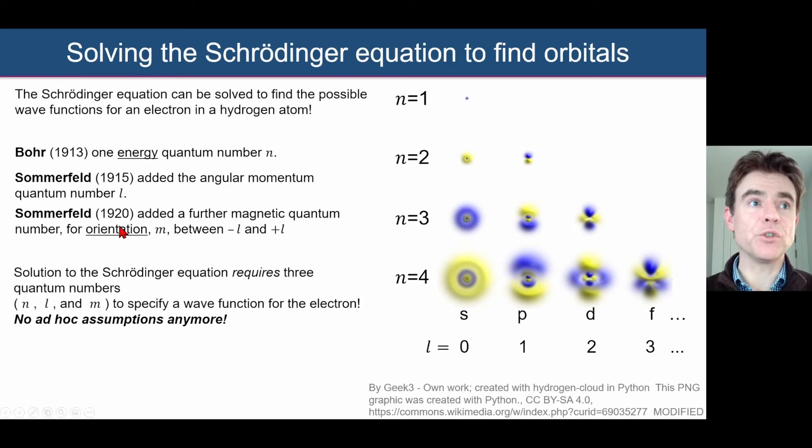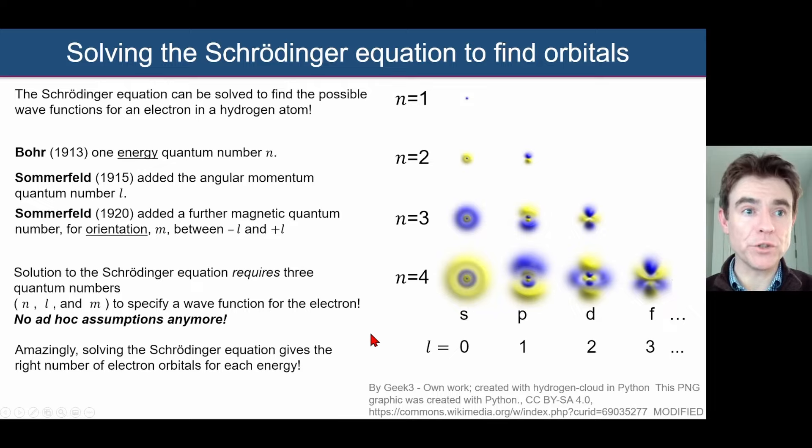So there were no more ad hoc assumptions as in the old quantum theory, and furthermore, if you really look into it, the Schrödinger equation also directly predicts the number of electrons that can be obtained at any given particular energy level or orbital around an atom. So a very impressive outcome for the Schrödinger equation. Thank you very much for listening.